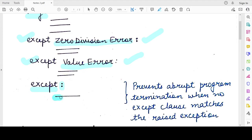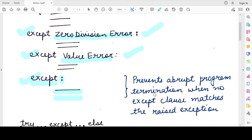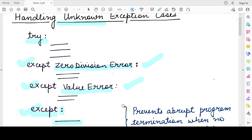You only write the colon exception and you write the code that you want to execute when any exception other than the named exceptions occurs in the try block. So this last except clause will prevent any abrupt termination of the program when no except clause matches the exception that has been thrown by the try block.